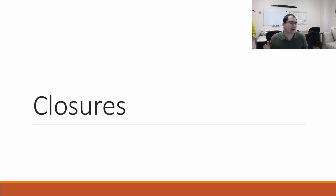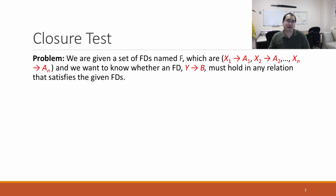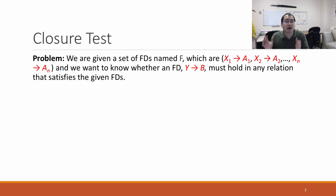In this video, we'll talk about something called closures, which are ways of calculating functional dependencies and the keys. A closure test is a way of checking whether or not a given functional dependency can be inferred given other functional dependencies. So if I hand you a bunch of functional dependencies we call F — x functionally determines a, x1 functionally determines a1, and so on — we want to know whether y functionally determines b, whether this must hold in any relation satisfying all the other functional dependencies.